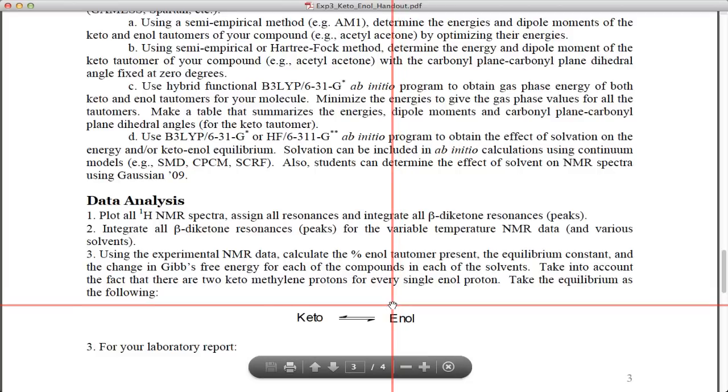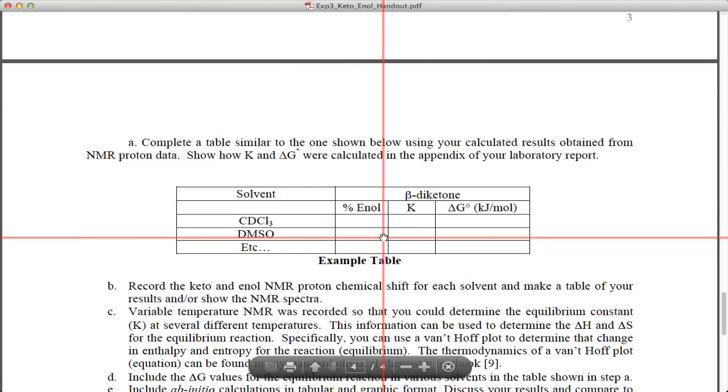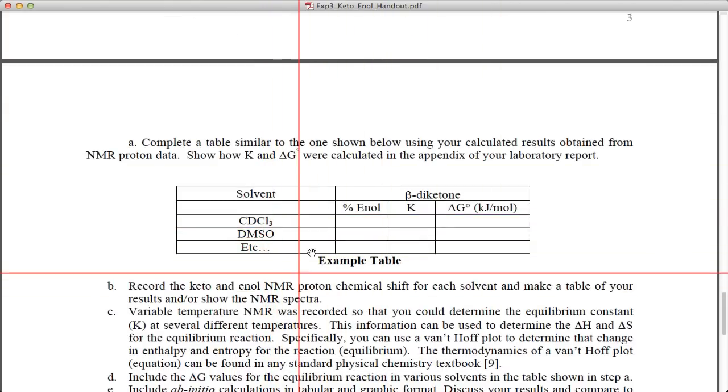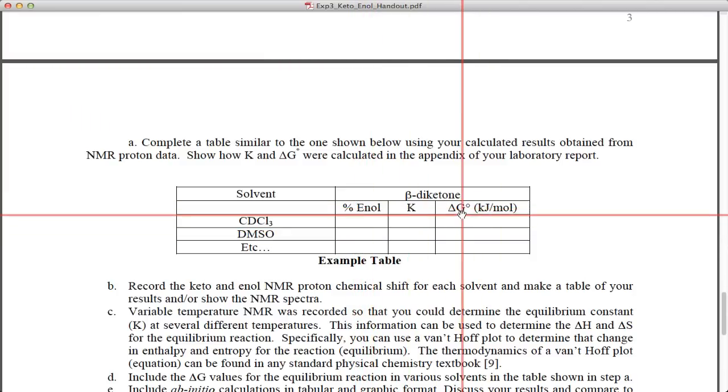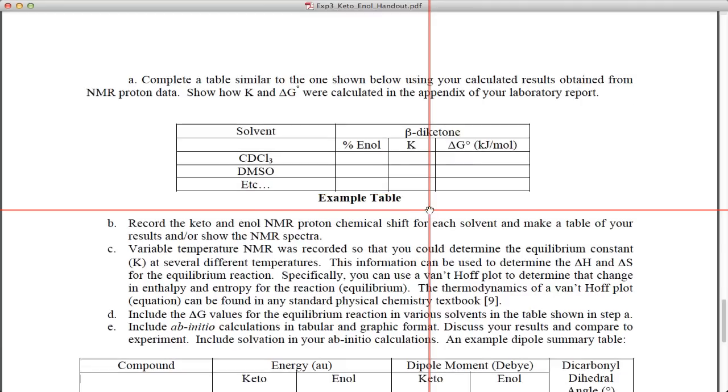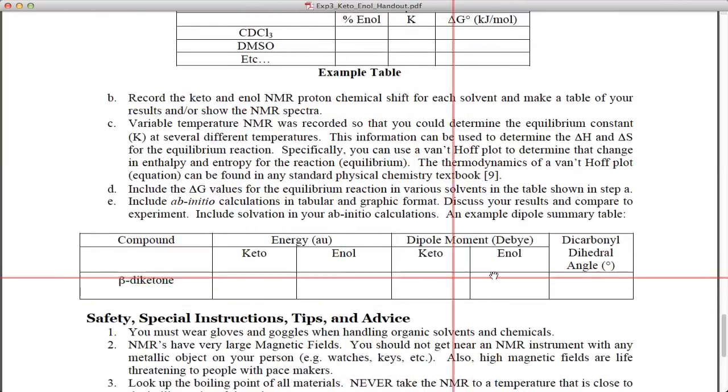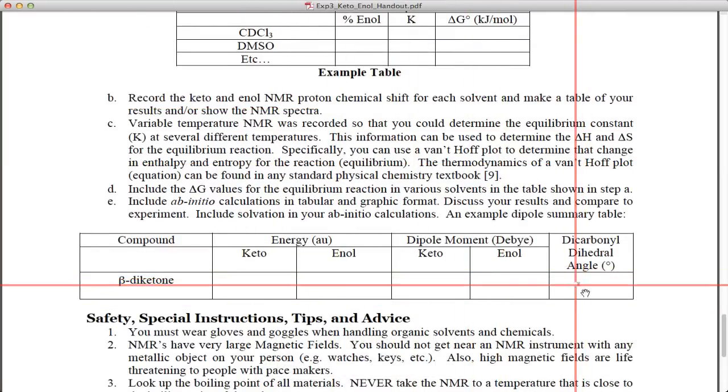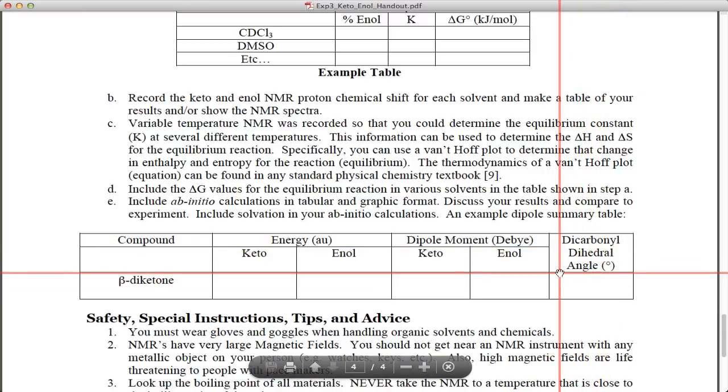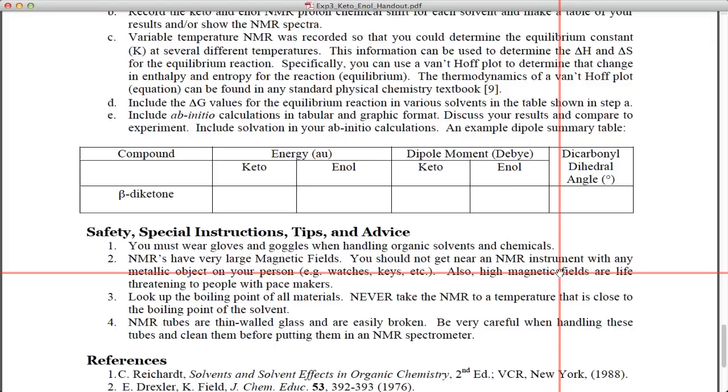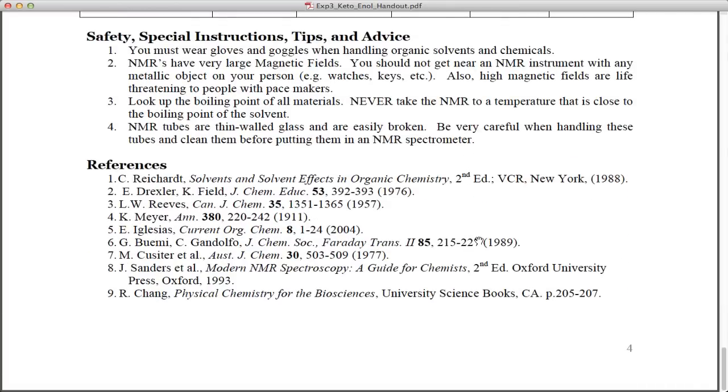Then of course you're going to analyze your NMR data and your computational data to see how they compare to see what the effect of solvent is. I've given you a couple example tables that you'll end up setting up like for different solvents, what's the percent enol, what's the percent ketone, the equilibrium, the delta G which are all related. You're exact diketone and then computationally you can put what the energies are for each of them, what the dipole moment is for the solvent you're using, what the dicarbonyl dihedral angle is to see how that affects things. This will give you a good sense at a molecular level of why this equilibrium changes in this experiment.